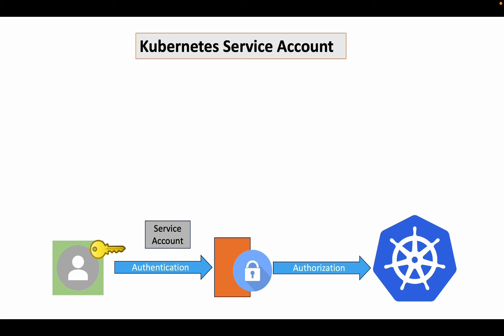The service account acts as an authentication mechanism for the pod. When you create a namespace, a service account is created with the namespace — even for the default namespace created as part of the Kubernetes installation. But how does the service account get the authentication details? That's where the Kubernetes token comes in. A token holds the JWT authentication details and is created as a secret, bound to the service account.